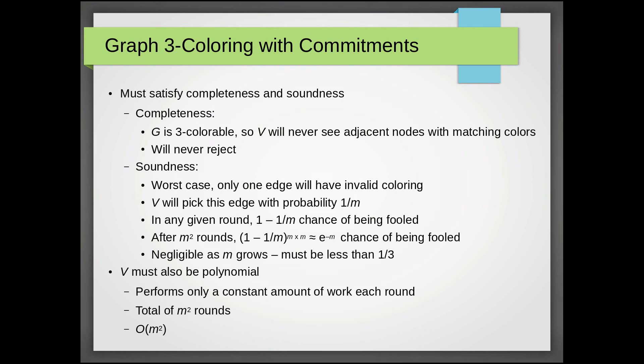For soundness, this means we must accept graphs without valid three colorings with probability less than one third. So note that in the worst case, only one edge in the graph will have an invalid coloring. And V picks this edge with probability one over M, because it uniformly picks from the available edges.